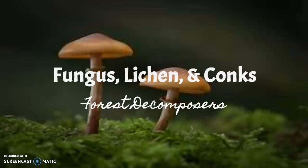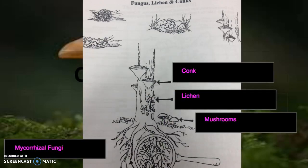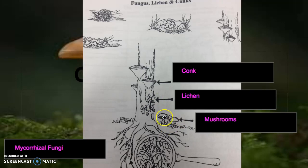Fungus, lichen, and conchs — forest decomposers. So when we look at fungus, lichen, and conchs, these are examples of conch. These flaky things that kind of look like moss are lichen. These are mushrooms, and these are called mycorrhizal fungi. They grow on the roots of trees.